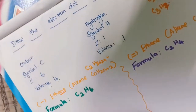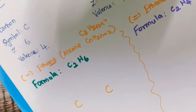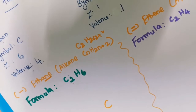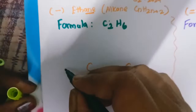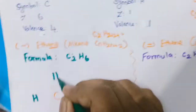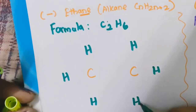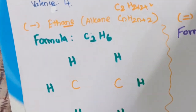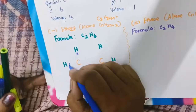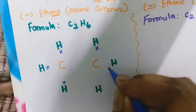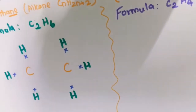We know there are 2 carbons and 6 hydrogens. So I am going to write 6 hydrogens, each having a valency of 1. The carbon has a valency of 4, so each carbon will have 4 valence electrons to share.